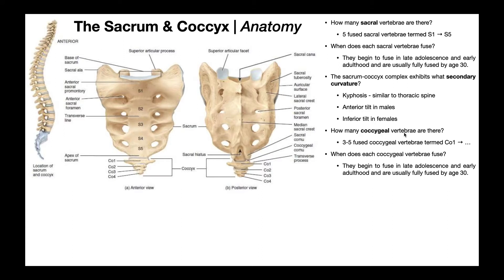So how many coccygeal vertebrae are there? This is different from the sacrum in the sense that there is some genetic variability. There are always five fused sacral segments, but in the coccyx it can range between three and five fused coccygeal vertebrae, termed CO1, CO2, and CO3. We use CO rather than C, since C is already designated for the cervical spine. They also begin to fuse in late adolescence and early adulthood and are usually fully fused by the age of 30.